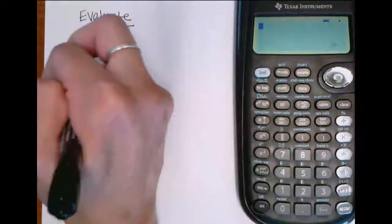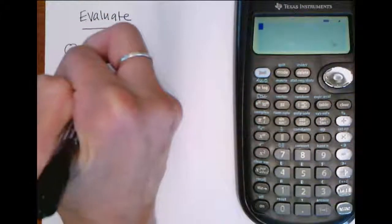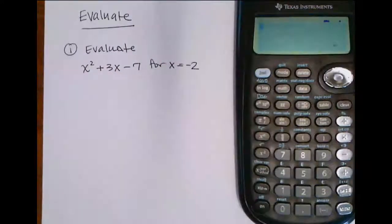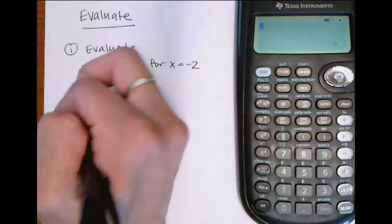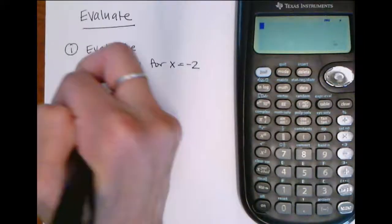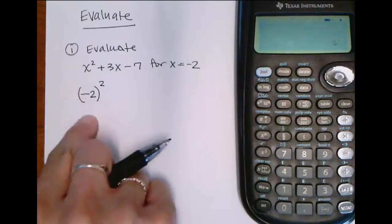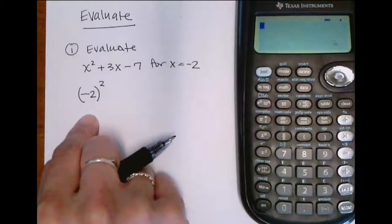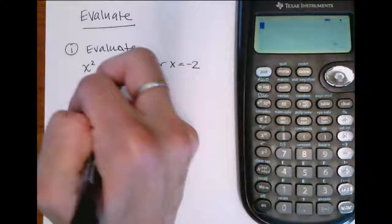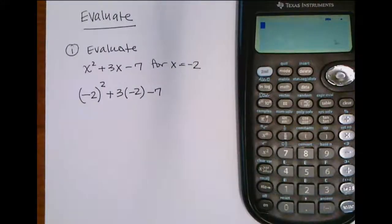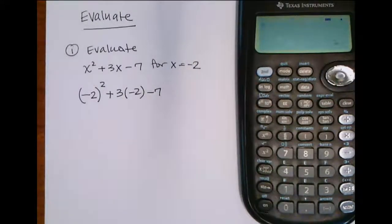Evaluate x squared plus 3x minus 7 for x is equal to negative 2. Alright, this is definitely a problem where students will make mistakes, especially here when they plug in the negative 2. A lot of students will forget to put the negative 2 into parentheses, whether they're doing this in the calculator or by hand. They will forget that negative 2 squared should be a positive 4. So one thing you can do, especially if you're going to evaluate something multiple times, you could type it in exactly like it is, just replacing and making sure to use parentheses.